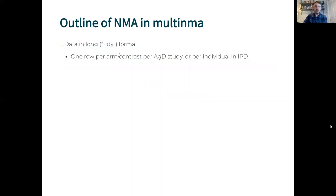An outline of a network meta-regression analysis in multi-NMA. First we start with data in a long or tidy format, that's one row per arm or contrast per aggregate study or per individual in the IPD.